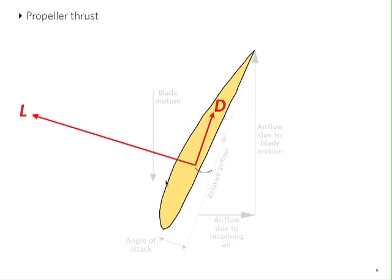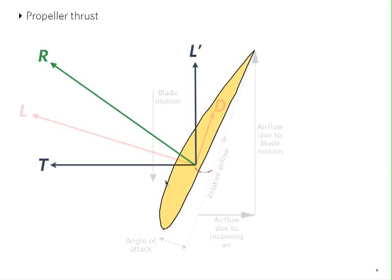Now we take these two forces and calculate the resultant - the vector sum of lift and drag. This is the resultant aerodynamic force on this section of the blade. We can decompose this resultant again into two forces, one horizontal and one vertical. The horizontal component is thrust.